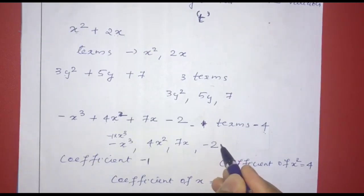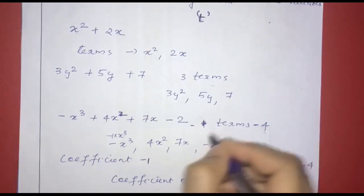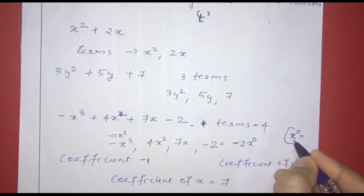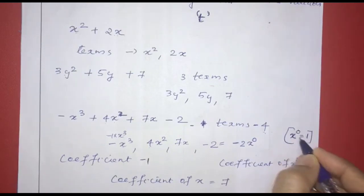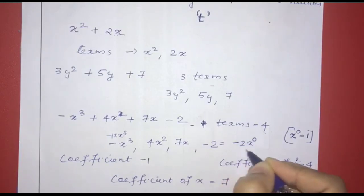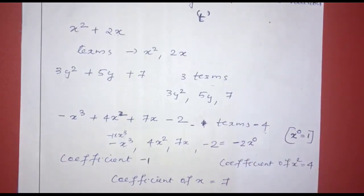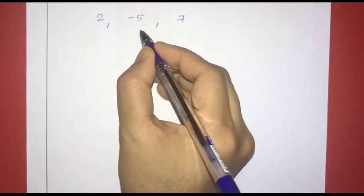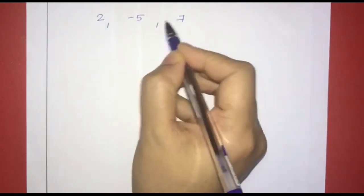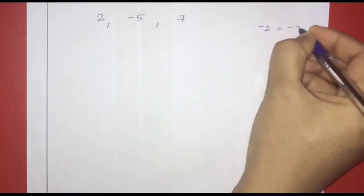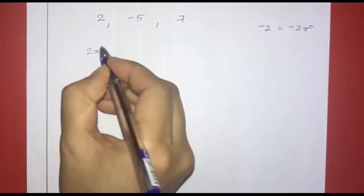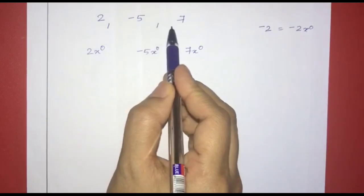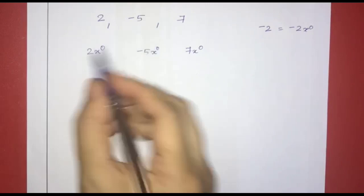For the constant term minus 2, we can write it as minus 2 into x raised to 0, since x raised to 0 equals 1. So the coefficient of x raised to 0 is minus 2. Similarly, numbers like 2, negative 5, and 7 can each be written as 2 times x raised to 0, negative 5 times x raised to 0, and 7 times x raised to 0. These are called constant polynomials.